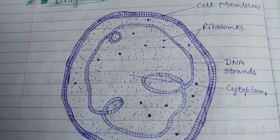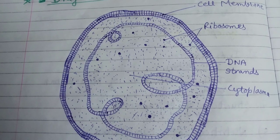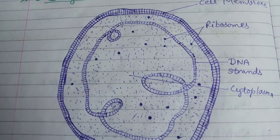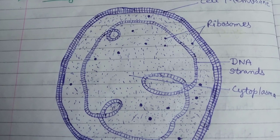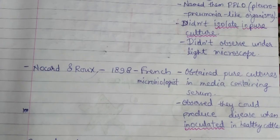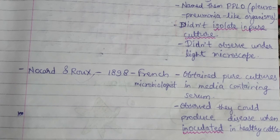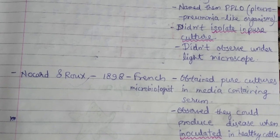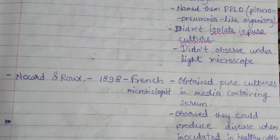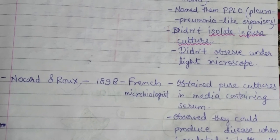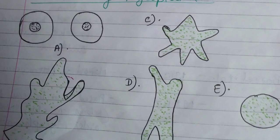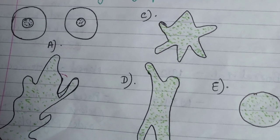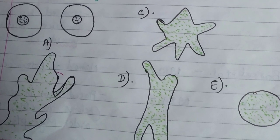First, DNA gets replicated, then cell elongation takes place, followed by septum formation. The septum is completed with the formation of two distinct walls, after which the cells separate. This completes one generation of mycoplasma.